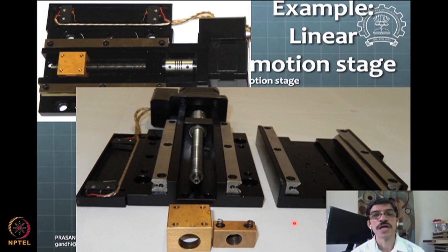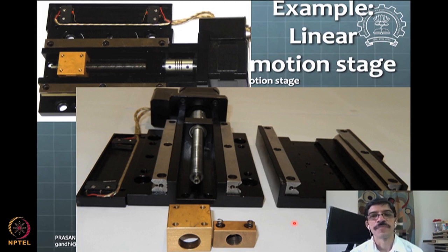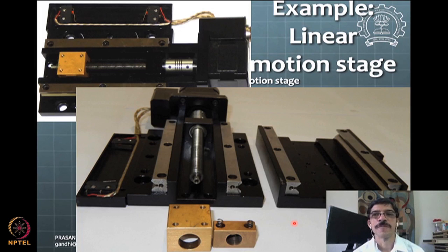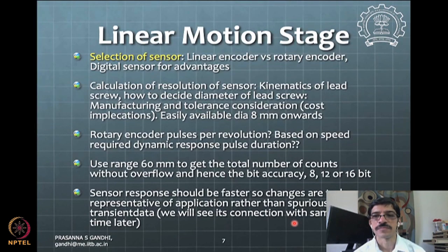One can start with estimates when exact values are unavailable. This design process is iterative: start with some details, use them to consult the manufacturer catalog, select a sensor, review more detailed specifications, and verify whether the choice suffices. If not, iterate again to select other specifications.